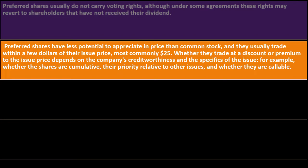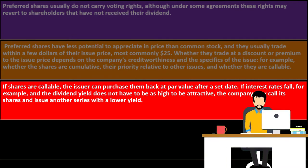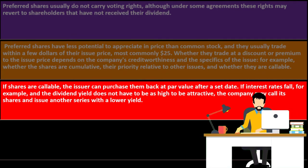Most preferred shares trade at around $25. Whether they trade at a discount or premium to the issue price depends on the company's creditworthiness and the specifics of the issue — for example, whether the shares are cumulative, their priority relative to other issues, and whether they are callable. If shares are callable, the issuer can purchase them back at par value after a set date. If interest rates fall and the dividend yield doesn't need to be as high, the company may call its shares and issue another series with a lower yield.